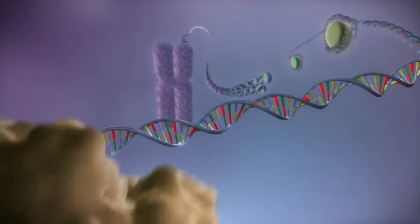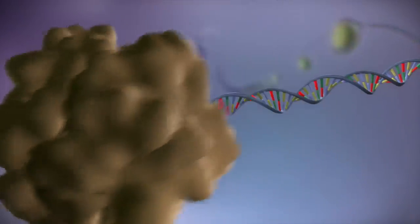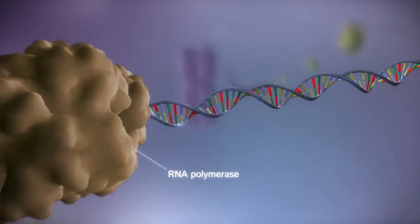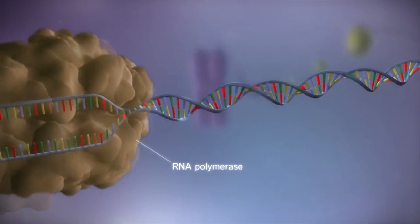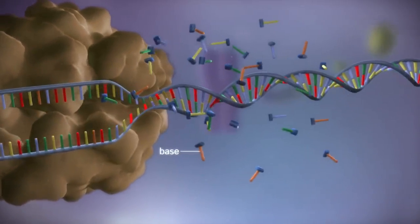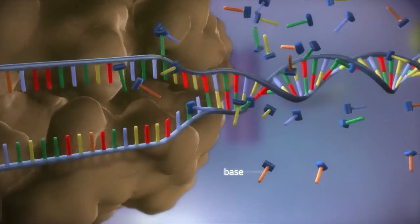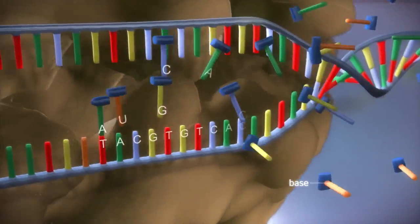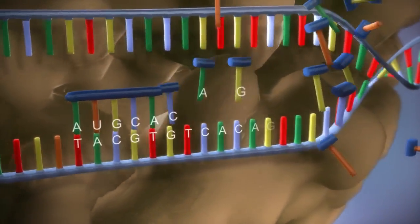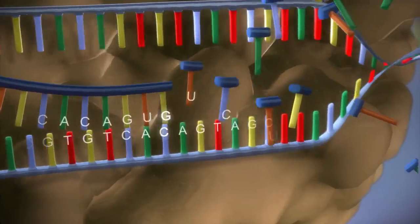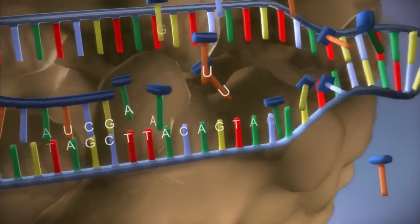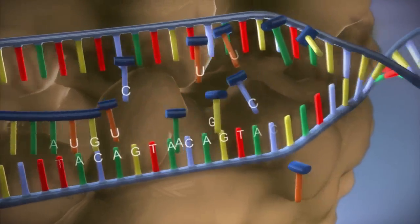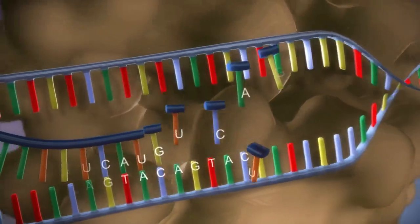When a gene is switched on, an enzyme called RNA polymerase attaches to the start of the gene. It moves along the DNA, making a strand of messenger RNA out of free bases in the nucleus. The DNA code determines the order in which the free bases are added to the messenger RNA. This process is called transcription.